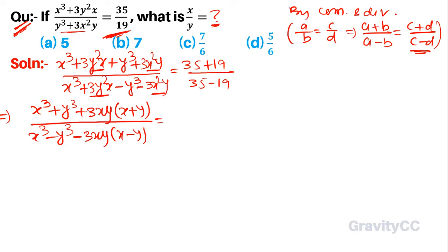This is 54 and this is 16. Canceling gives us 27 over 8, which equals x plus y cubed over x minus y cubed.